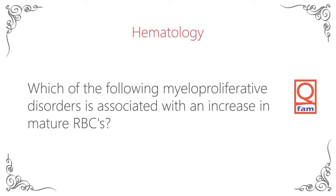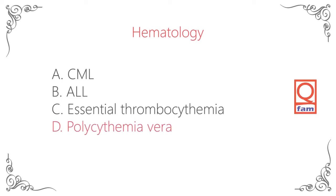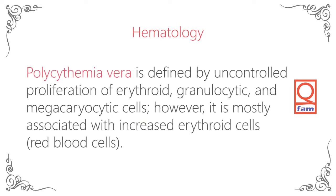Which of the following myeloproliferative disorders is associated with an increase in a certain amount of blood cells? The answer is polycythemia vera. Polycythemia vera is defined by uncontrolled proliferation of erythroid, granulocytic, and megakaryocytic cells. However, it is mostly associated with increased erythroid cells — red blood cells.